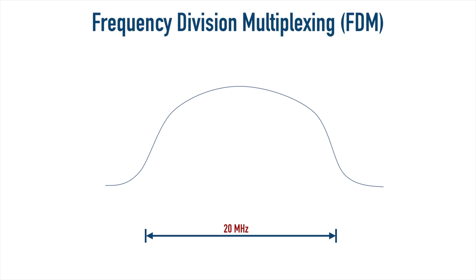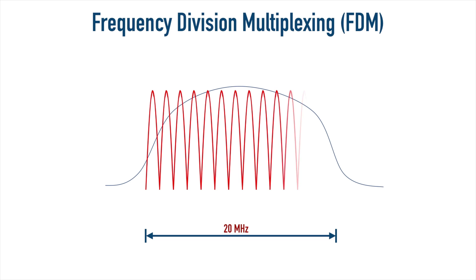We're going to go from Direct Sequence Spread Spectrum to Frequency Division Multiplexing. Here we're just using 20 MHz of that channel instead of 22 MHz, and instead of allowing a single communications flow to occupy the full 20 MHz channel, we're going to break it down into sub-channels. These sub-channels are so close together that we don't want one channel to interfere with another — and if they're just right next to each other, they very well could interfere.